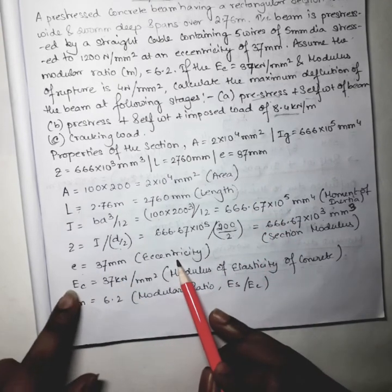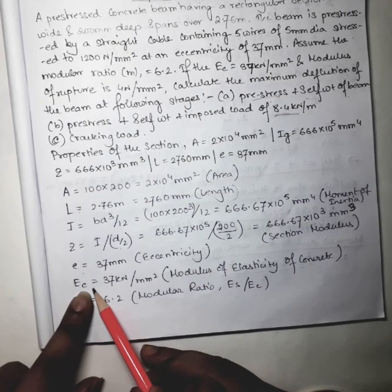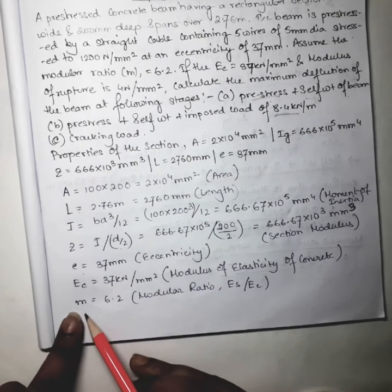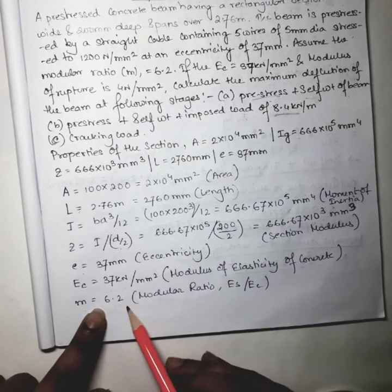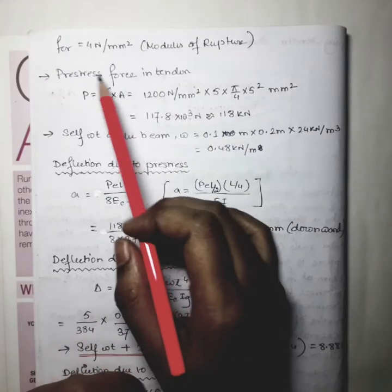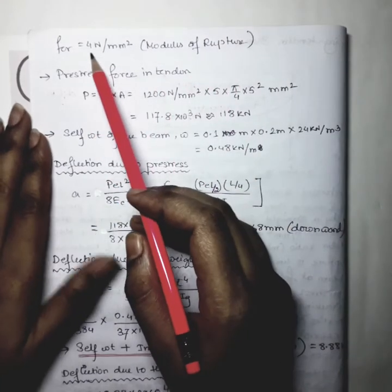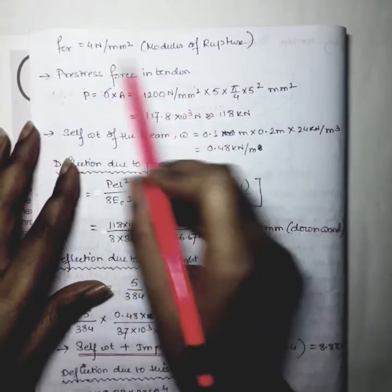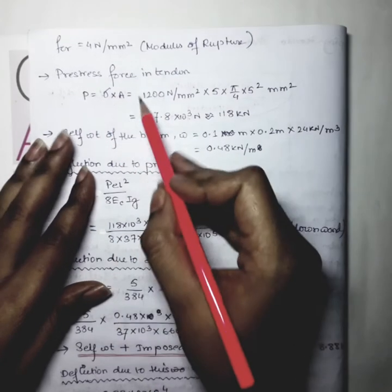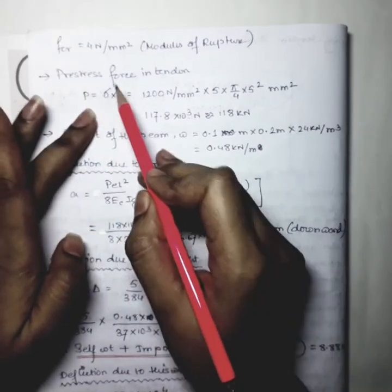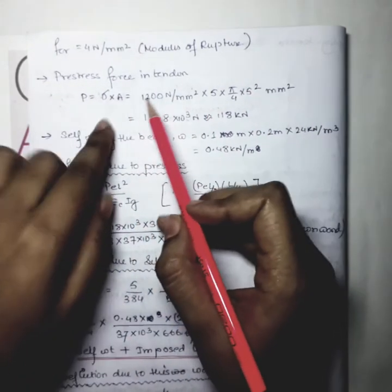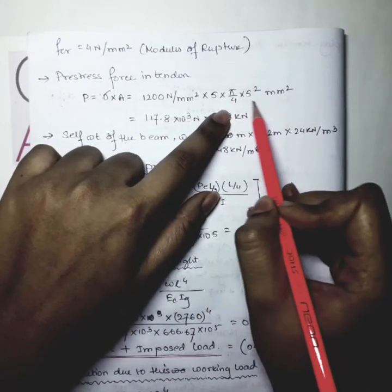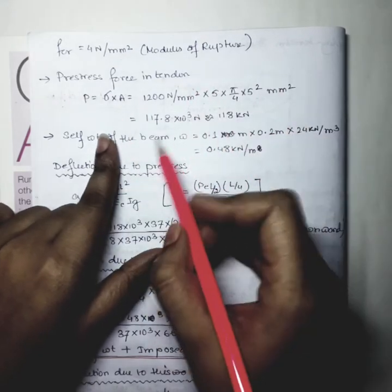Eccentricity is 37 mm as given. Modulus of elasticity of concrete is 37 kN/mm², modular ratio is 6.2, and modulus of rupture is 4 N/mm². Now let us find the pre-stress force in the tendon: P = stress × number of wires × area per wire = 1200 × 5 × (π/4 × 5²) = 118 kN.